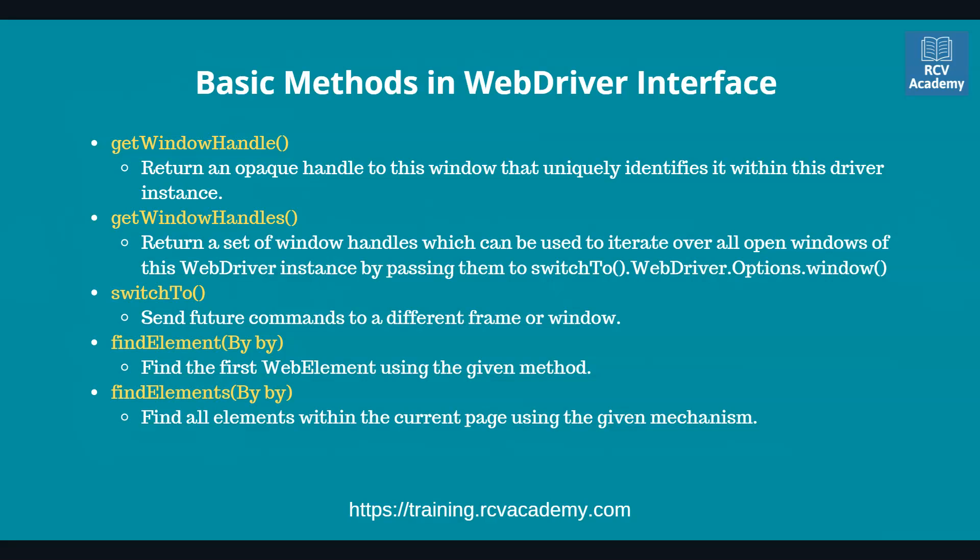The findElement method helps you to find an element using different techniques. The element locator techniques we have discussed — like ID, name, XPath, and CSS selector — you can use those to find the element. We have already seen in the previous tutorial how we identified the element.